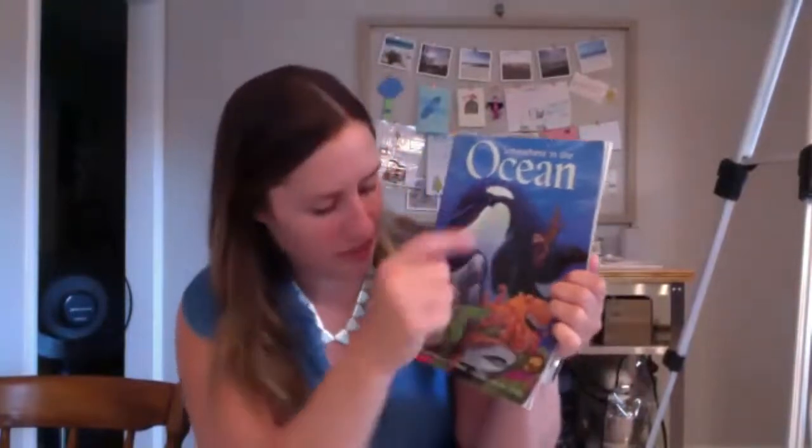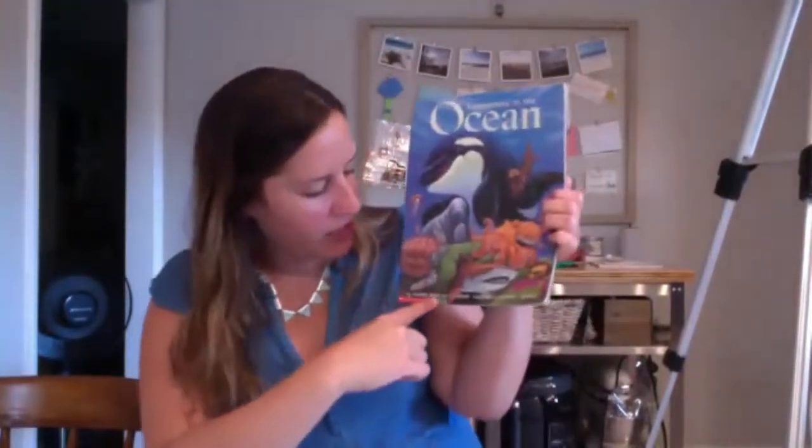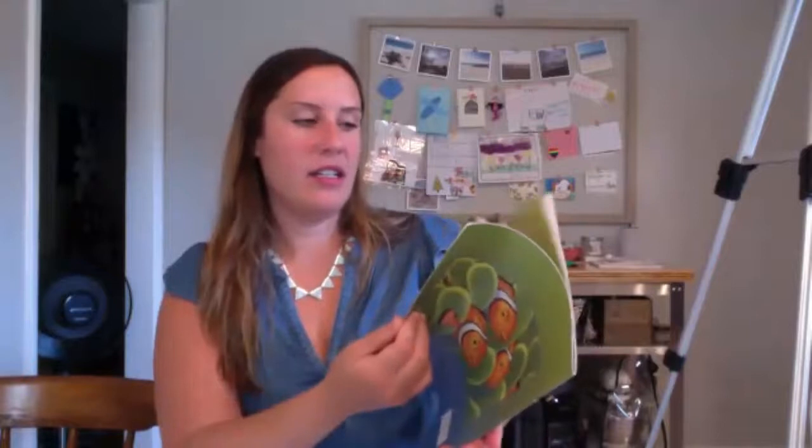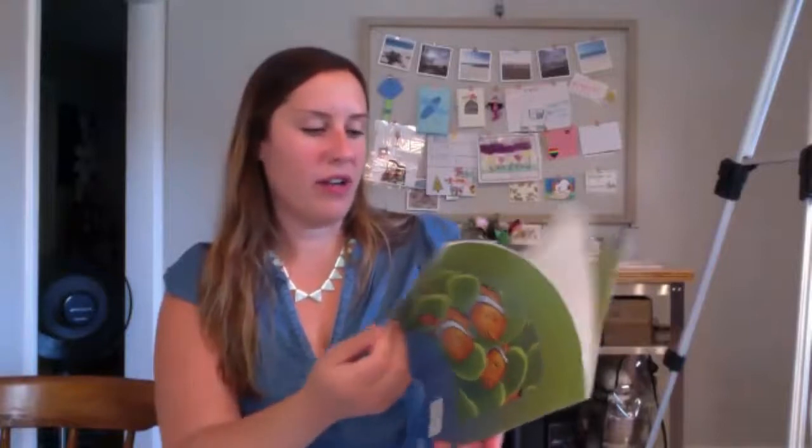For our next project, I'm going to read a book first so we can learn about some sea creatures and get some inspiration. It's called Somewhere in the Ocean by Jennifer Ward and TJ Marsh, illustrated by Kenneth J. Spengler. He drew all the pictures in this book. He's the artist, and artists that work on books are called illustrators.